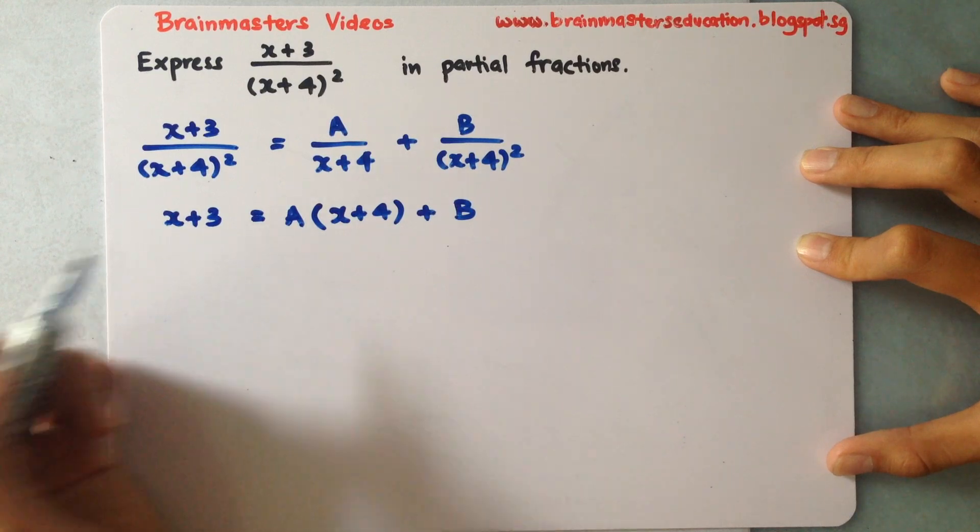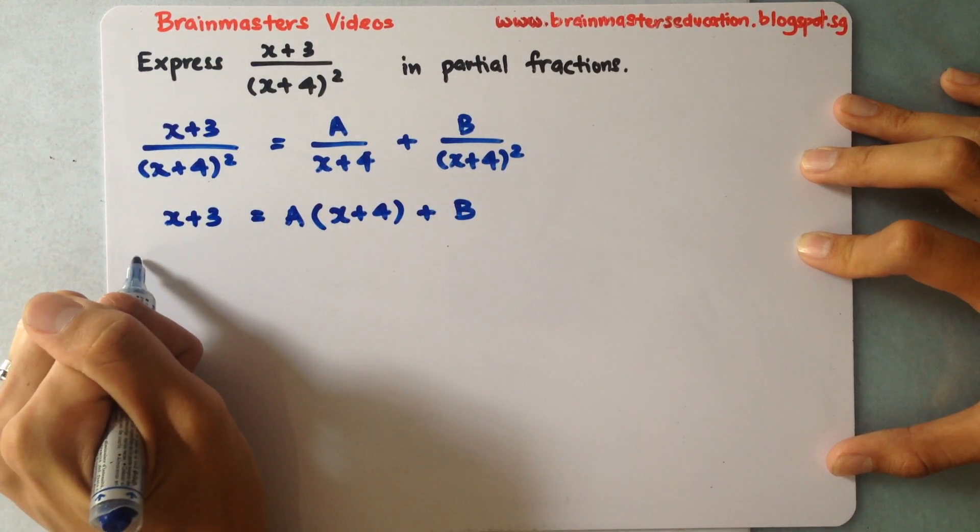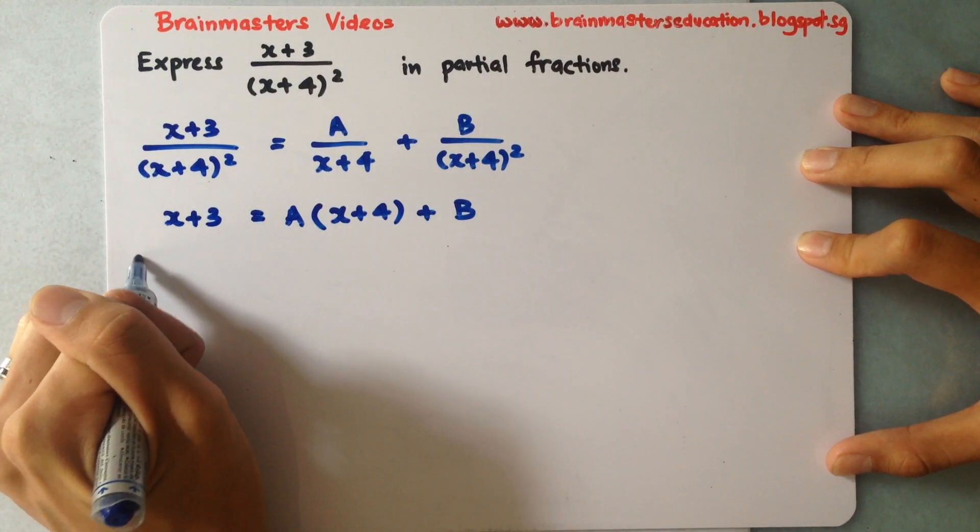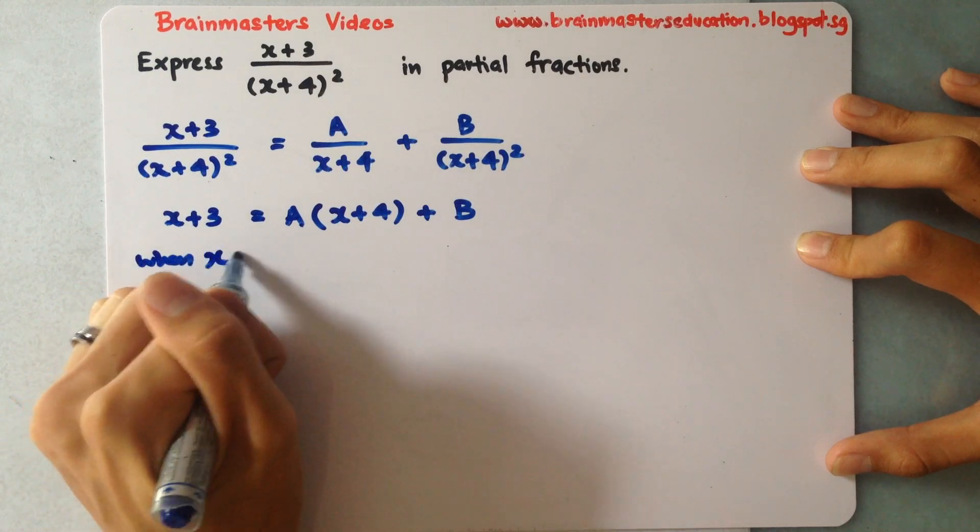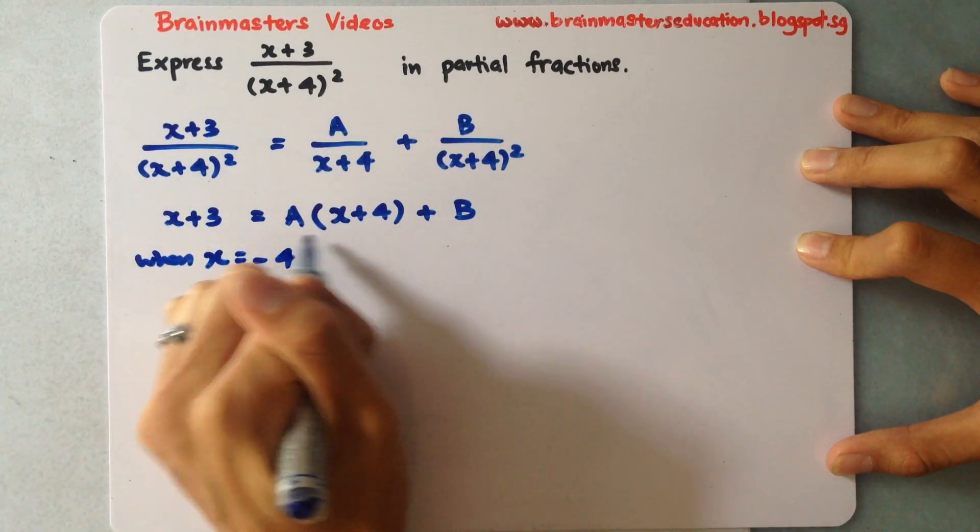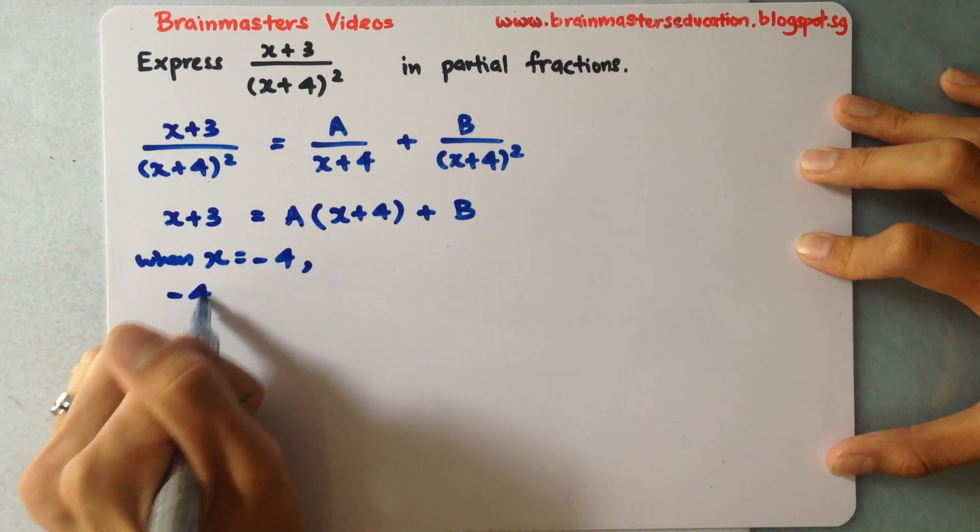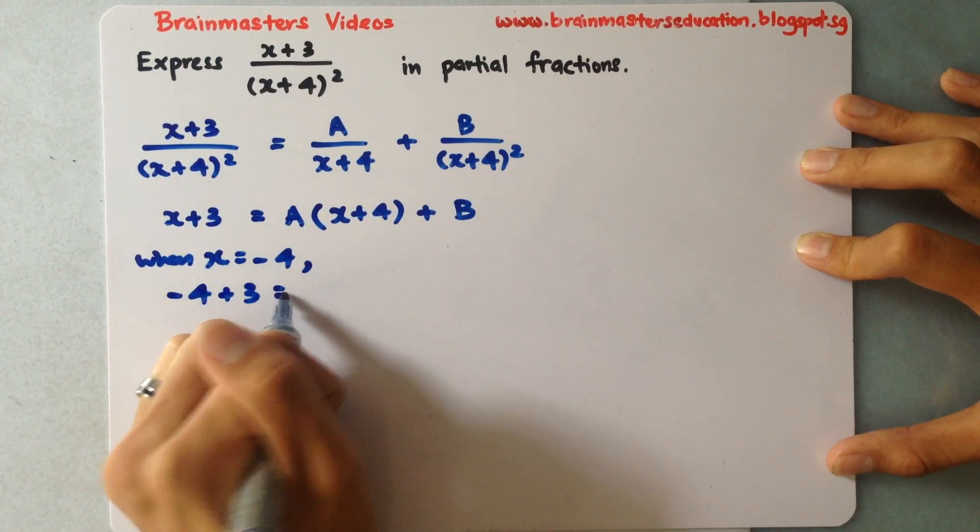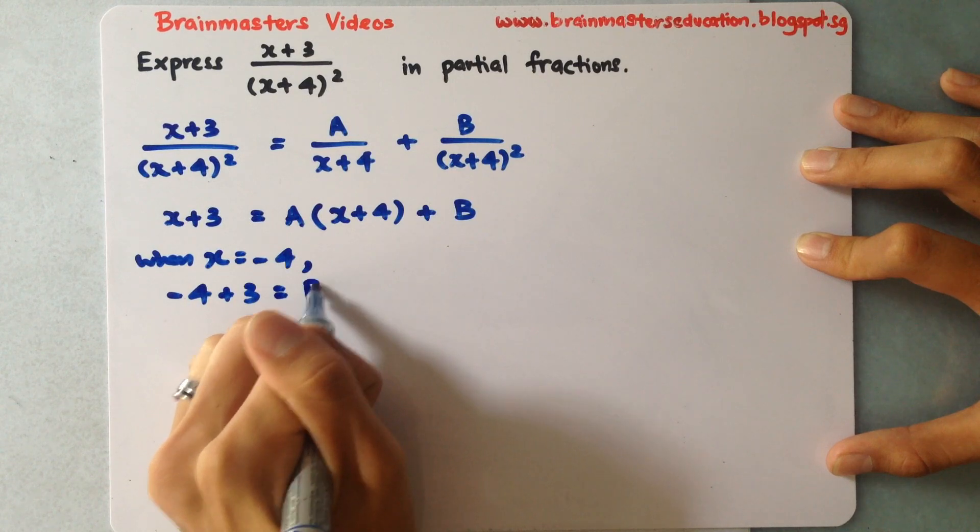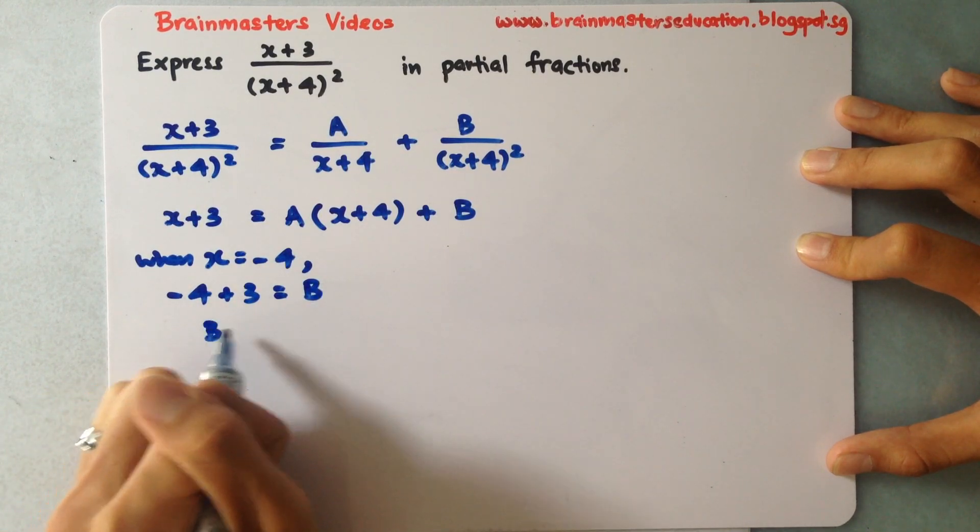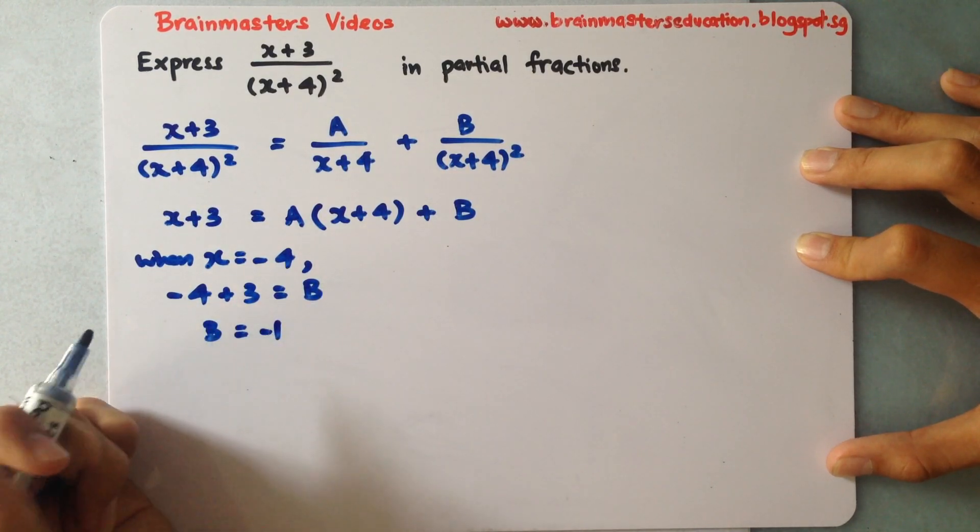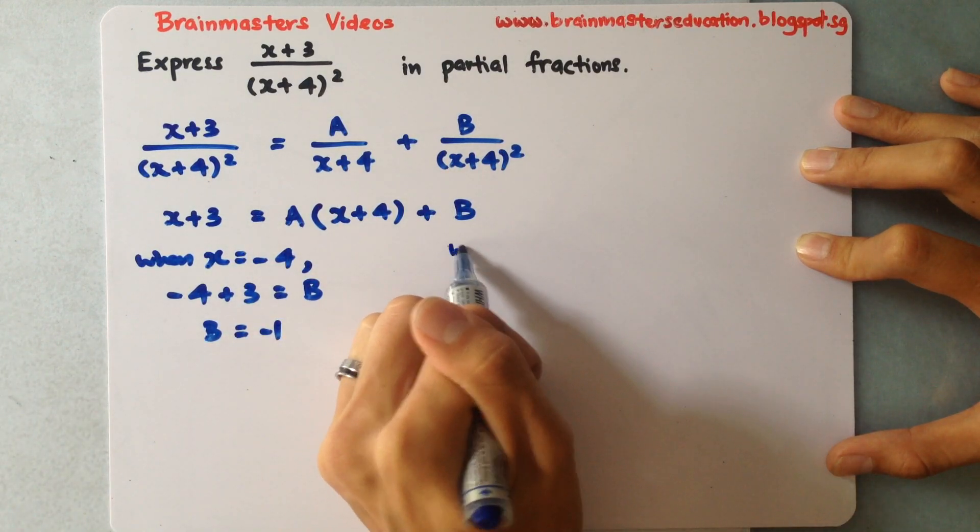First I'll need to substitute when x equals negative 4 to get this as 0, to solve for my B. So negative 4 plus 3, this will be 0, so I'll be able to find that my B equals negative 1.